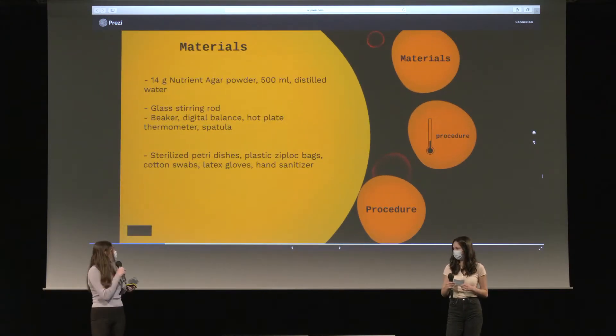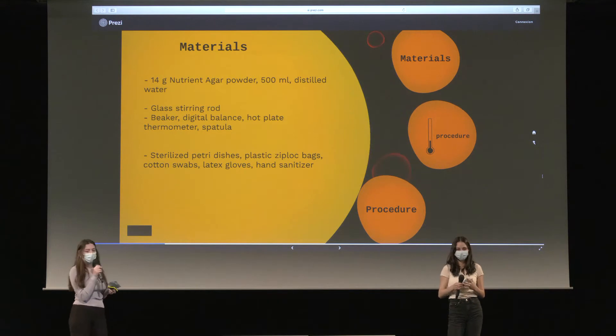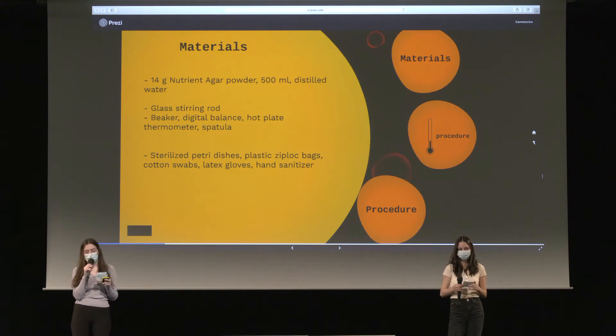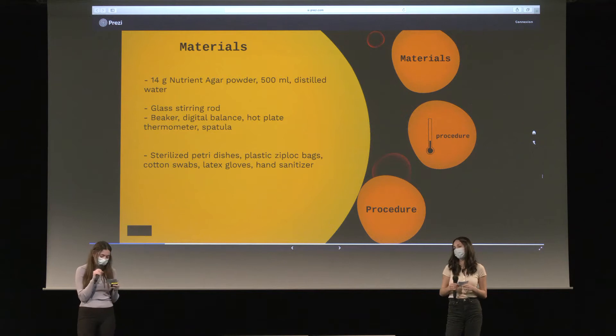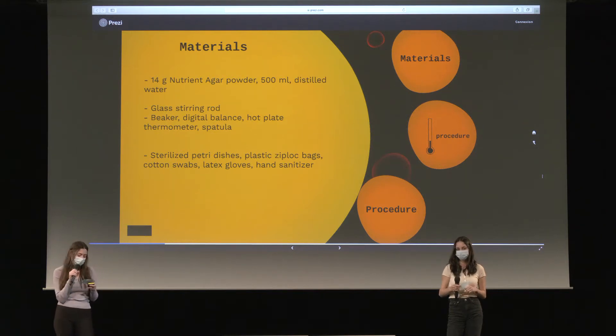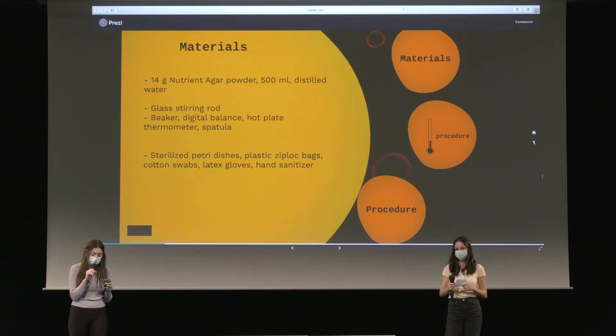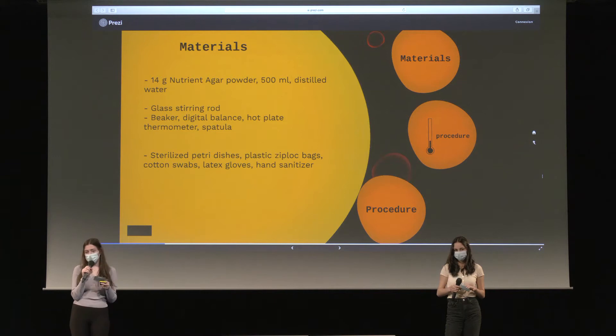For our materials, we used 14 grams of nutrient agar to create 20 dishes of agar and 500 milliliters of water. For our equipment, we used a stirring rod, a beaker, a balance, a hot plate, a spatula, and a thermometer.